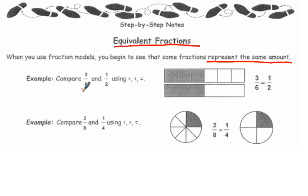For example, compare 3 sixths and 1 half using less than, greater than, or equal to. We can see that 3 out of 6 represents the same amount as 1 out of 2, so they are equivalent fractions.